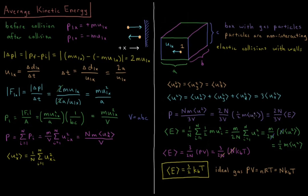Since the particles are non-interacting inside the box there's no potential energy, so the entire energy of each particle is kinetic energy. The average kinetic energy of each particle is (1/N) times the sum from i=1 to N of ½mUᵢ². Factoring out m/2, this equals (m/2N) times the sum of Uᵢ², and since that sum equals N times ⟨U²⟩, the N's cancel, giving average energy equal to (m/2)⟨U²⟩.